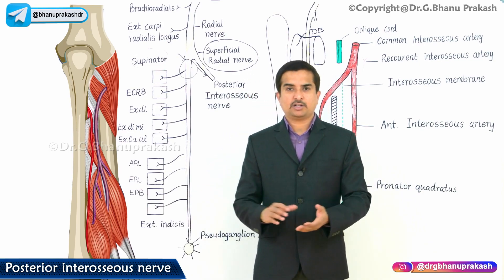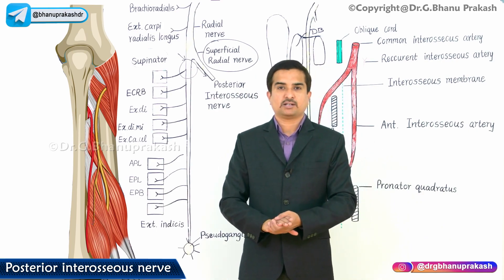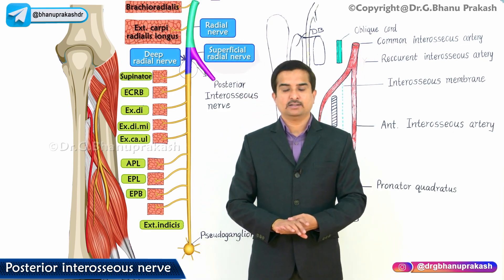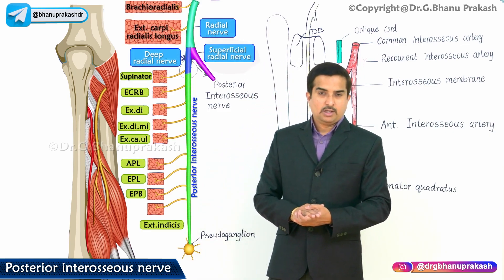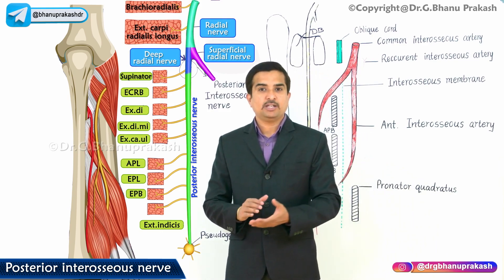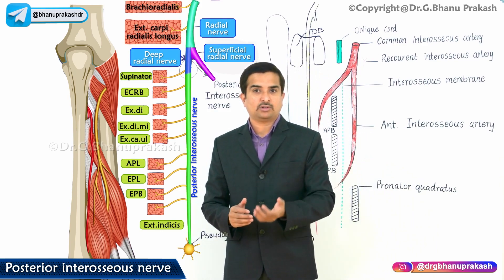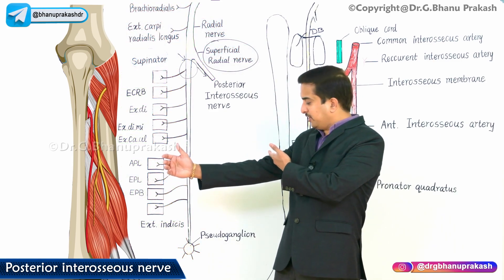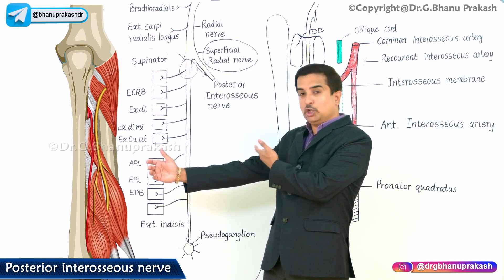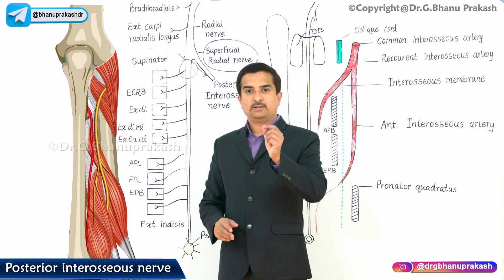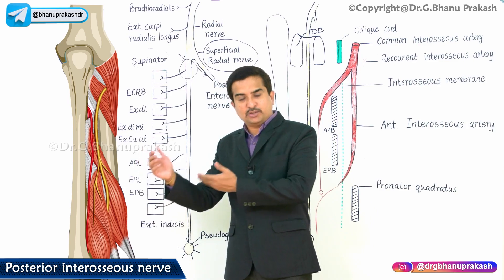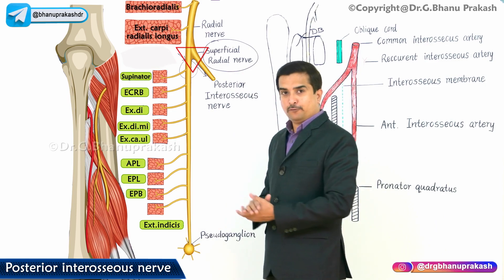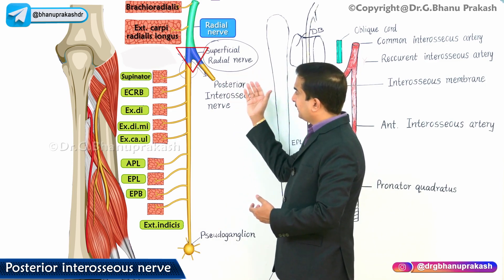The posterior interosseous nerve is not a separate nerve of the posterior compartment of the forearm; rather, it is a continuation of the deep branch of the radial nerve. If you see the anatomy of the radial nerve in relation to the lateral epicondyle and the cubital fossa, the radial nerve is anterior to the lateral epicondyle in the lower aspect of the arm, from where it enters into the cubital fossa. In the cubital fossa, the radial nerve gives off two branches.